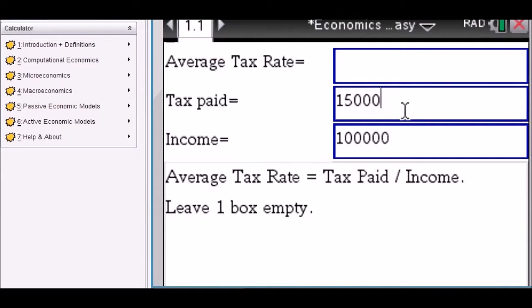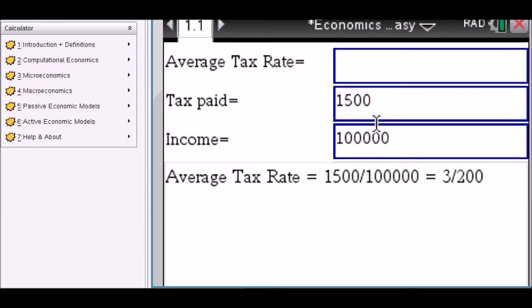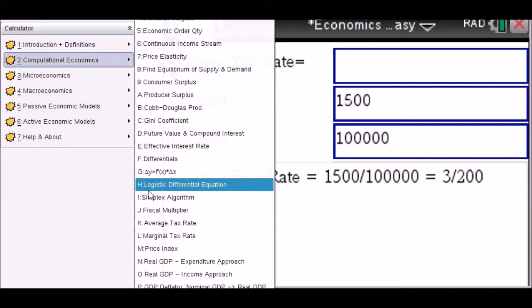Okay, so you leave again one box empty as it shows you here. Average tax rate is tax paid divided by income. Okay, so you're going to get a fractional answer. If you want a decimal answer, just make one of your two inputs a decimal. And all of a sudden you have a decimal answer. So you can see very versatile.